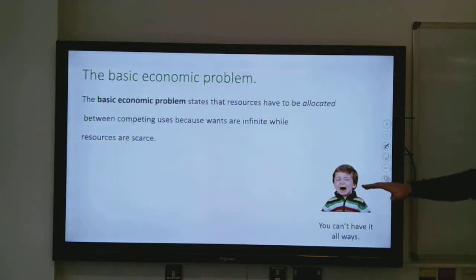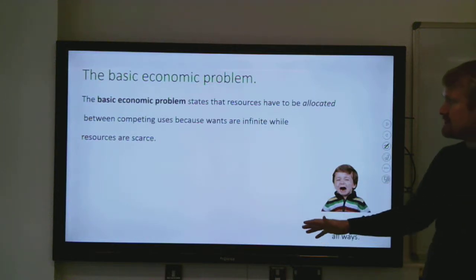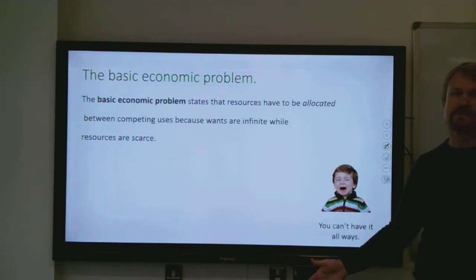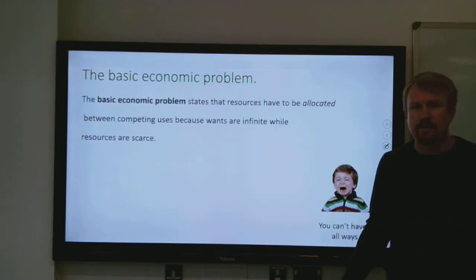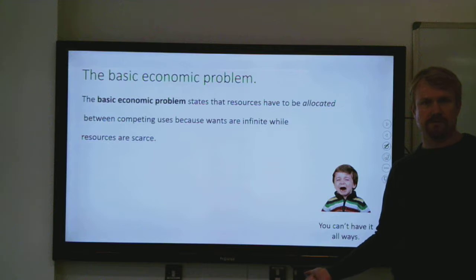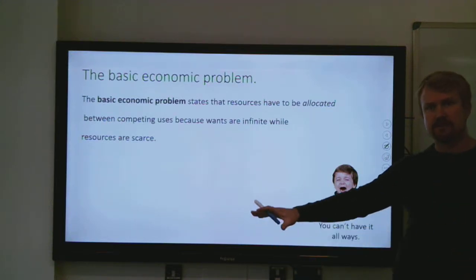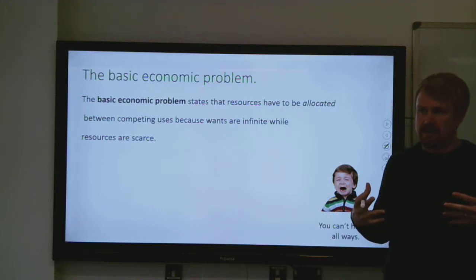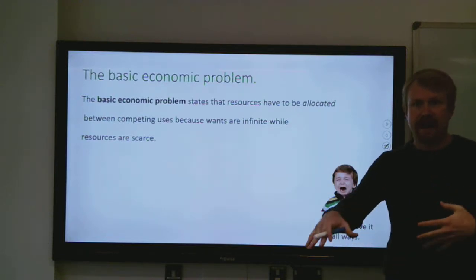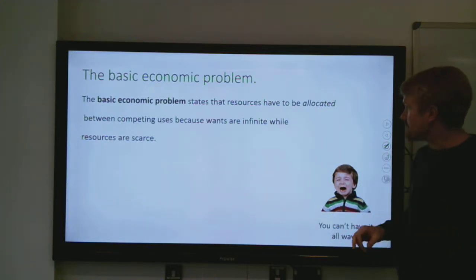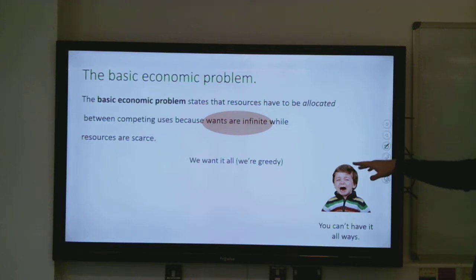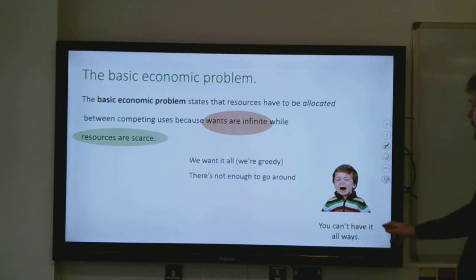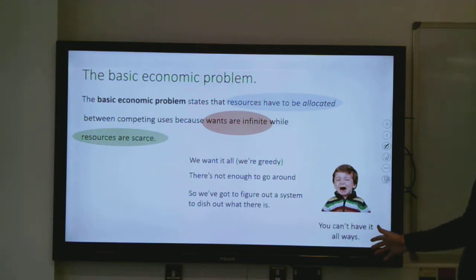That's really what the basic economic problem is. It says that resources have to be allocated between competing uses, between wants which are infinite, while resources are scarce. I've got a list of a hundred things I'd really like to have, but my resources in order to produce them are scarce — I've only got so much land. The fundamental question of economics is: how do we divide that up to make sure we're producing the right thing? Our wants are infinite — we're all greedy, we all want things — but our resources are scarce, there's not enough to go around. So we've got to figure out a system to dish out what there is; that's what we mean when we say resources have to be allocated.